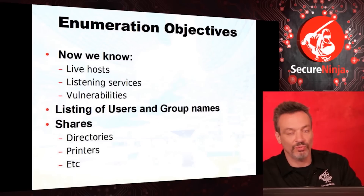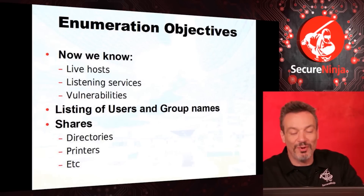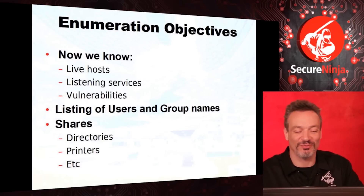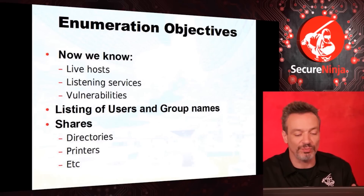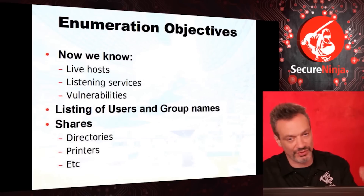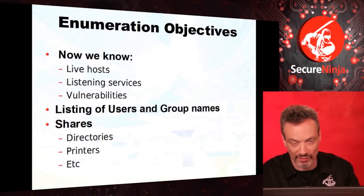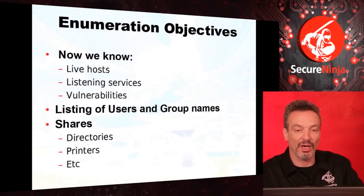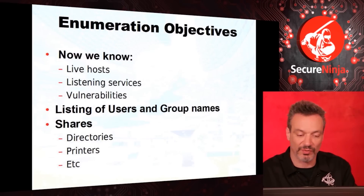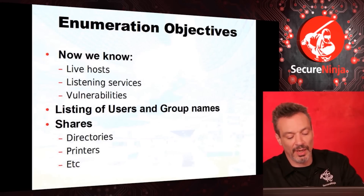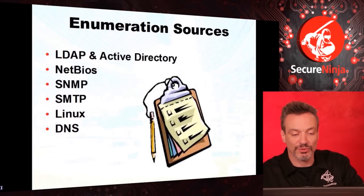All right, we know the live hosts, we know what services are listening — we identified some key ones — and assuming we found some vulnerabilities. Now we want to list the user names, group names, and shares. If it's a print server, what's the name of that print server? What is it capable of? If it's a directory, what's the name of that directory? Who has rights to it? What's in it? Files, whatever.